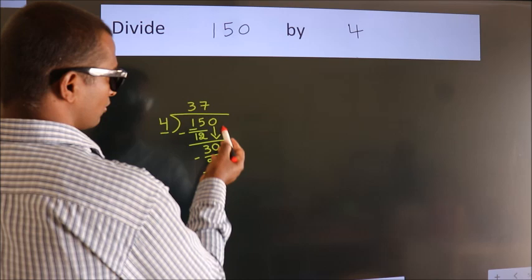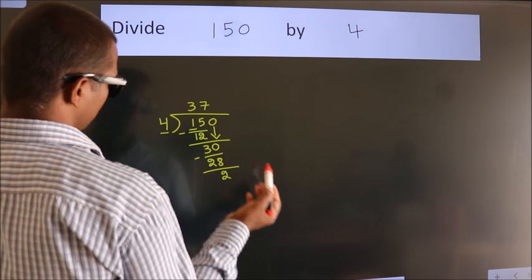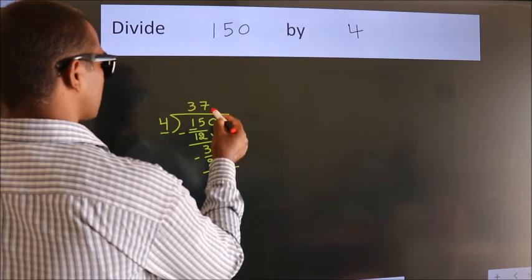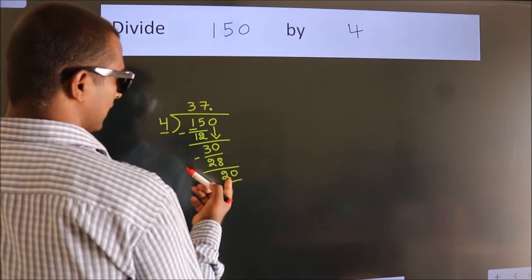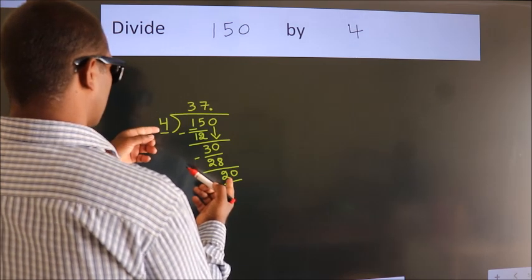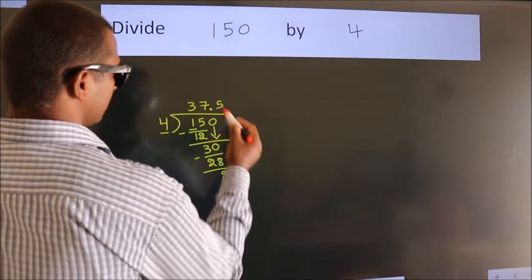After this, no more numbers to bring down. So what we do is, we put a dot, take 0. So 20. When do we get 20? In the 4 table. 4 fives, 20.